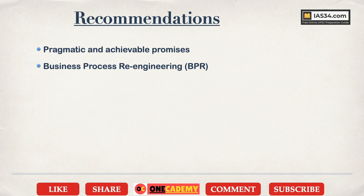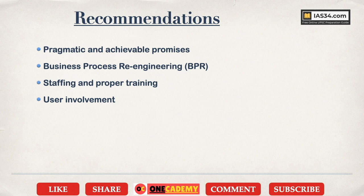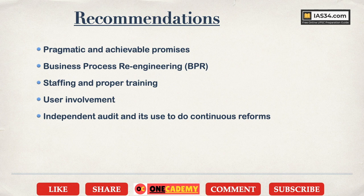The next recommendation is proper staffing — there should be enough trained staff to deliver service efficiently. Staff must develop empathy and service orientation. User involvement — meaning citizen involvement — is a must. Citizens should be involved at each level to understand what kind of service they expect, and all feedback and grievances must be taken very seriously. There should also be independent external audit to check whether services are delivered on time and efficiently, and the audit report must drive continuous reforms.